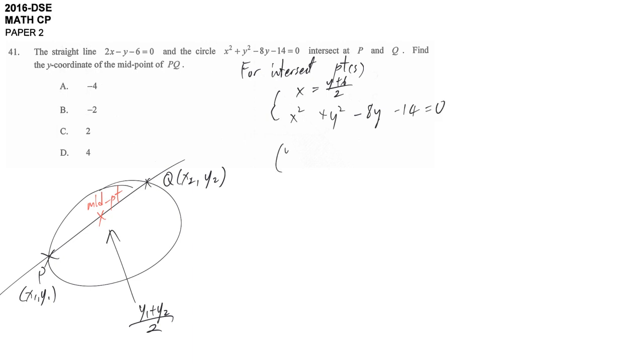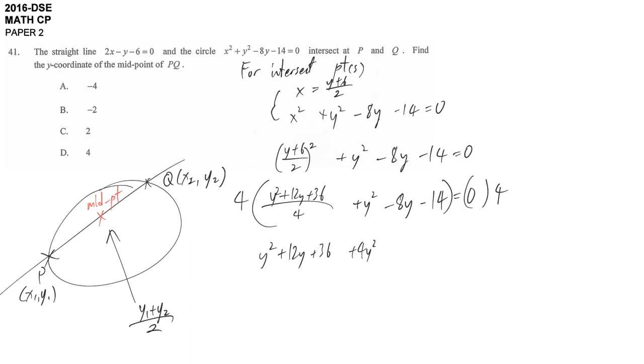So you'll substitute inside: y plus 6 over 2 bracket square. I hate fractions, so both sides times 4: 5y squared minus 8y minus 20 equal to 0, plus 4y squared minus 32y minus 56 equal to 0.